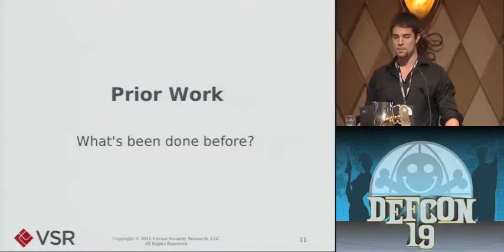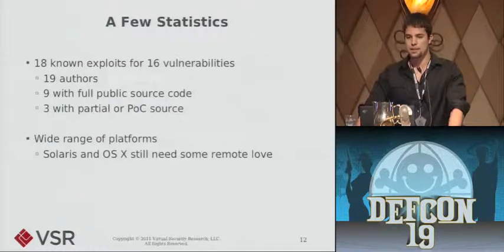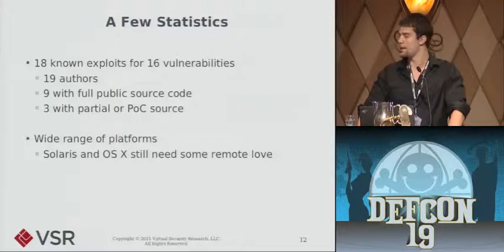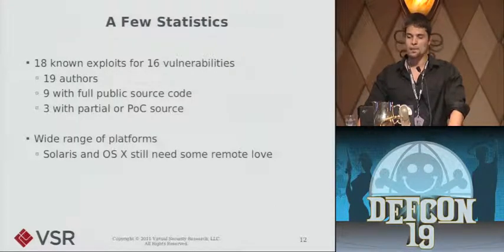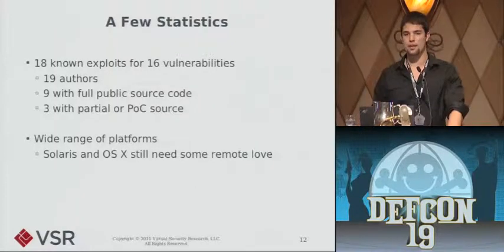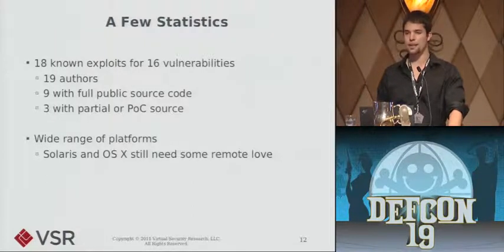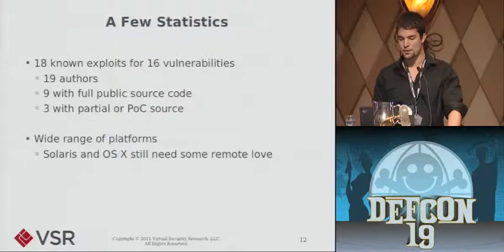Before I get into what I did, I wanted to talk about what's been done before. I researched every remote kernel exploit I could find and identified 18 exploits that have been talked about or published, for 16 unique vulnerabilities, written by 19 people. Nine of them have full public source code, many of them Metasploit modules. Three have partial or proof-of-concept source code, and the rest were discussed in detail at conferences without code. These exploits cover a wide range of platforms. Solaris and OS X have not had any weaponized remote kernel exploits — so that's future work if you're into that sort of thing.